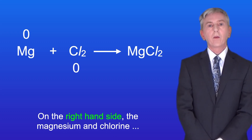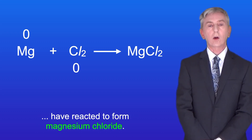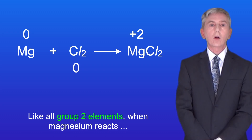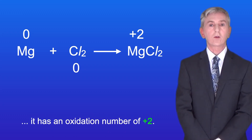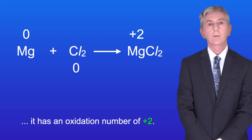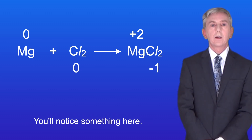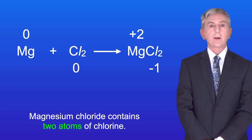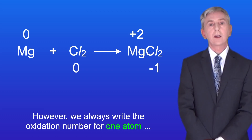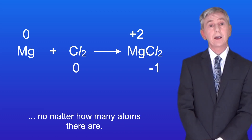On the right hand side the magnesium and chlorine have reacted to form magnesium chloride. Like all group 2 elements, when magnesium reacts it has an oxidation number of plus 2. Chlorine has an oxidation number of minus 1. You'll notice that magnesium chloride contains two atoms of chlorine; however we always write the oxidation number for one atom, no matter how many atoms there are.